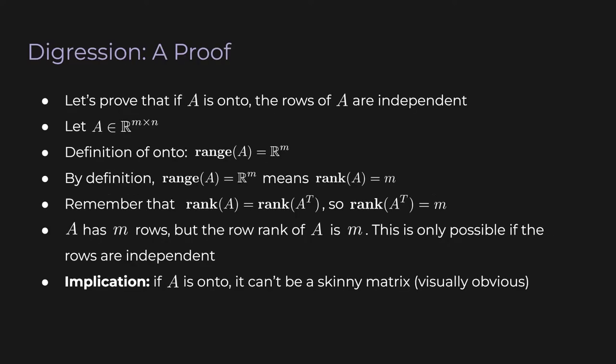Now it's time to prove that statement we learned about a couple of slides ago. I want to keep this course light on proofs, but I think it's worth going over because it chains together all the concepts we've just talked about. So let's prove that if A is onto, then the rows of A must be independent. Let's start with our usual arbitrary matrix A with M rows and N columns. We start with the definition of onto, which says that the range of A is R^M. By definition, range(A) equals R^M means that the rank of A equals M. Since row rank and column rank are always equal, the row rank of A is also M. Since A has M rows and the row rank of A is M, the only possibility is that all the rows of A are independent.